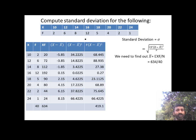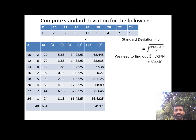The x values are 10, 12, 14, 16, 18, 20, 22, and 24, with corresponding frequencies 2, 6, 8, 12, 5, 4, 2, 1. Computing fx: 10×2=20, 12×6=72, 14×8=112, 16×12=192, 18×5=90, 20×4=80, 22×2=44, and 24×1=24. We take the total of all fx values, which gives us the sum of xf equal to 634.